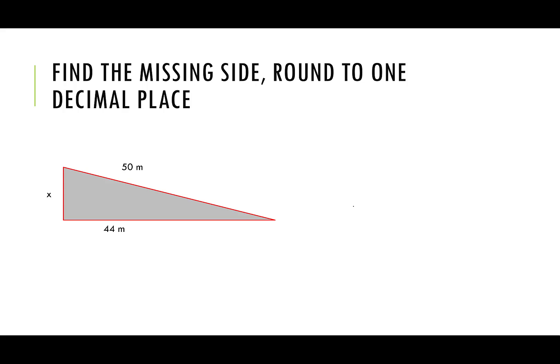One more time, find the missing side, and we're going to round to one decimal place. So kind of ahead of time, I'm telling you, all of them don't come out pretty. I'm not always going to get a nice whole number when I do the Pythagorean theorem. This time, I do have the hypotenuse already, so when I'm doing the setup, what I don't know is the height, so I'm going to write out x squared plus 44 squared is equal to 50 squared.